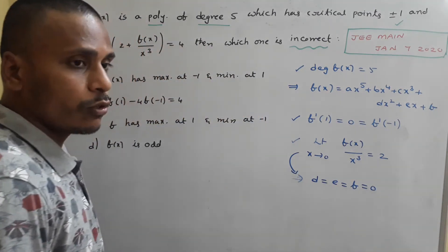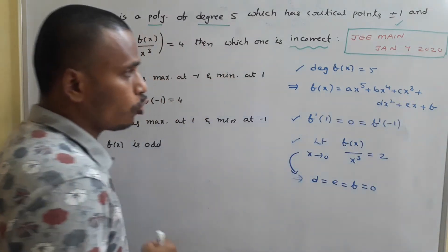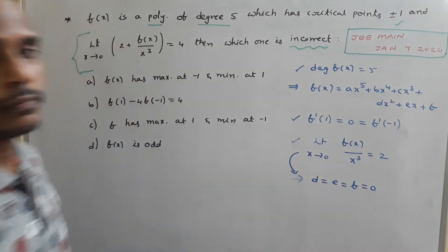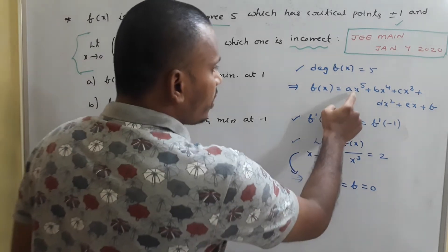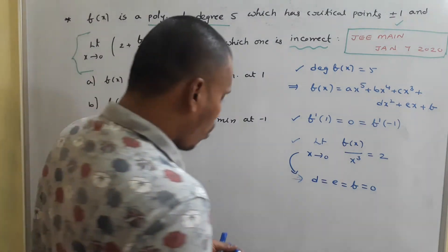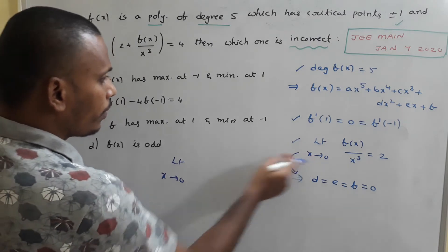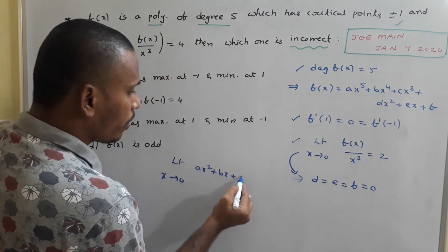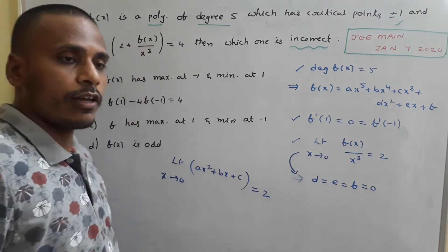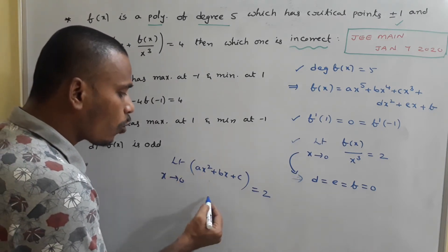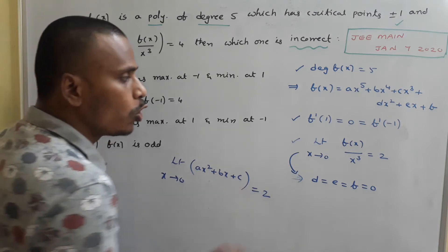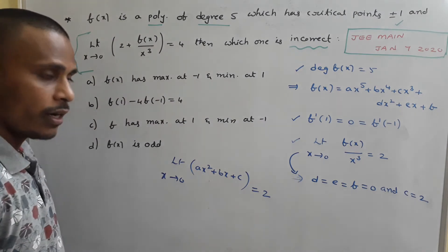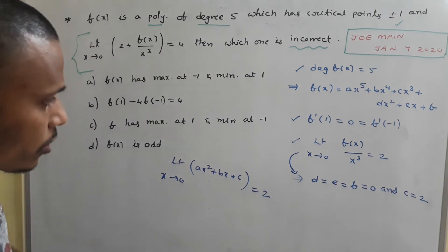With d = e = f = 0, we divide the remaining terms ax⁵ + bx⁴ + cx³ by x³, giving ax² + bx + c. As x→0, this expression equals c. Since the limit equals 2, we get c = 2. So from this condition: d = e = f = 0 and c = 2.